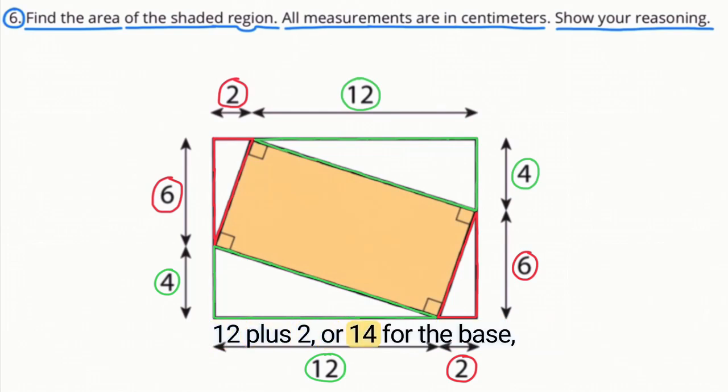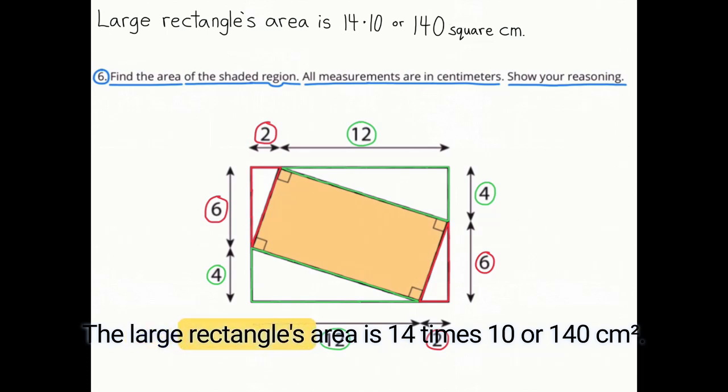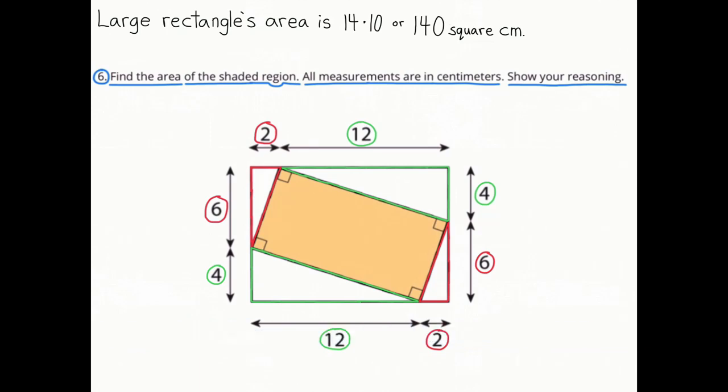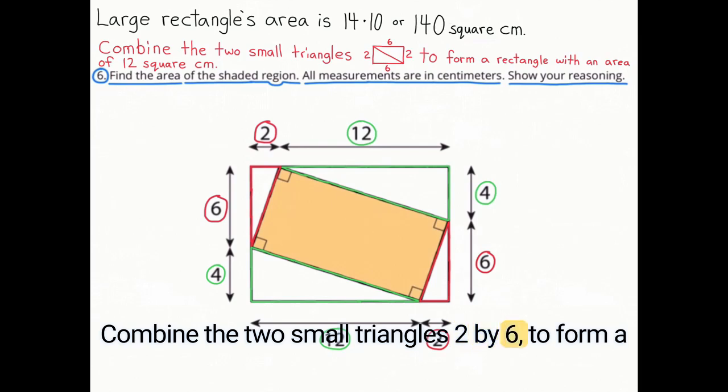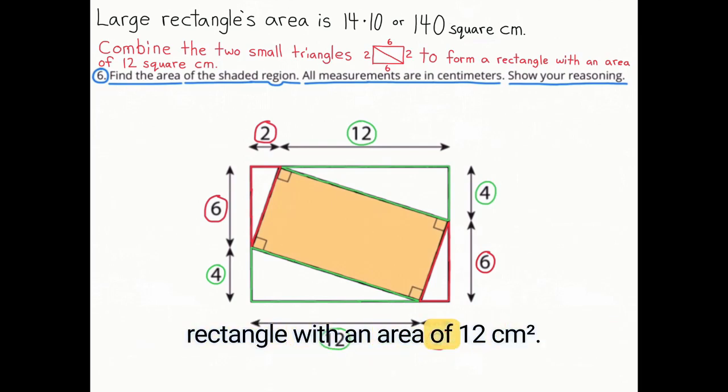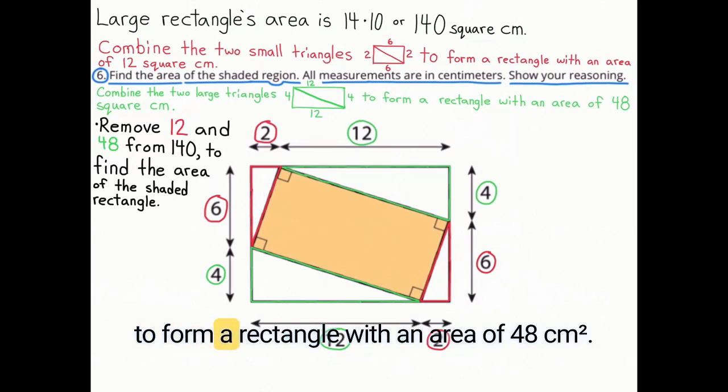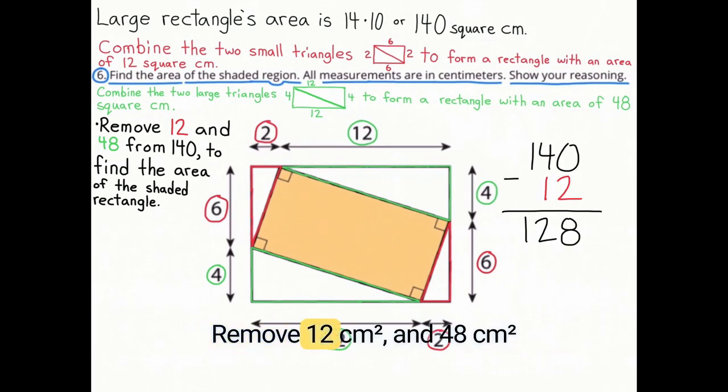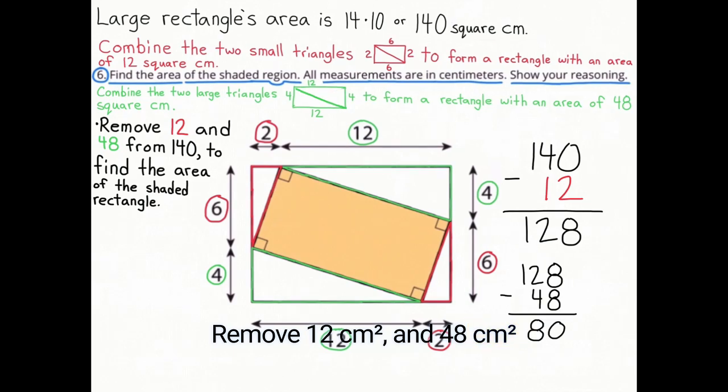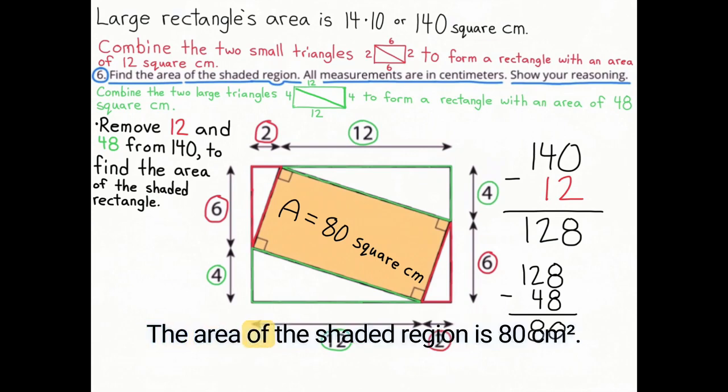12 plus 2, or 14, for the base, and 6 plus 4, or 10, for the height. The large rectangle's area is 14 times 10, or 140 square centimeters. Combine the two small triangles, 2 by 6, to form a rectangle with an area of 12 square centimeters. Combine the two large triangles, 4 by 12, to form a rectangle with an area of 48 square centimeters. Remove 12 square centimeters and 48 square centimeters from 140 square centimeters to find the area of the shaded region. The area of the shaded region is 80 square centimeters.